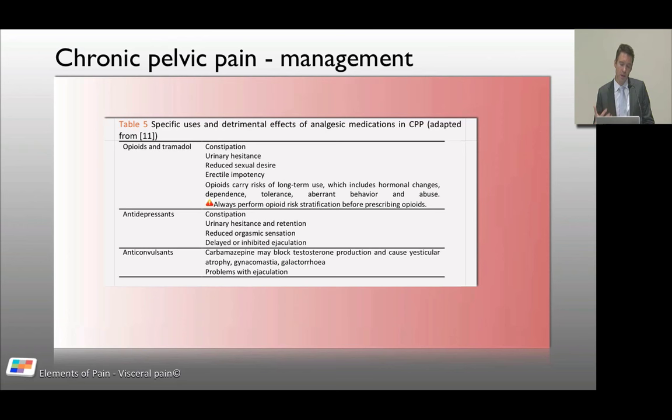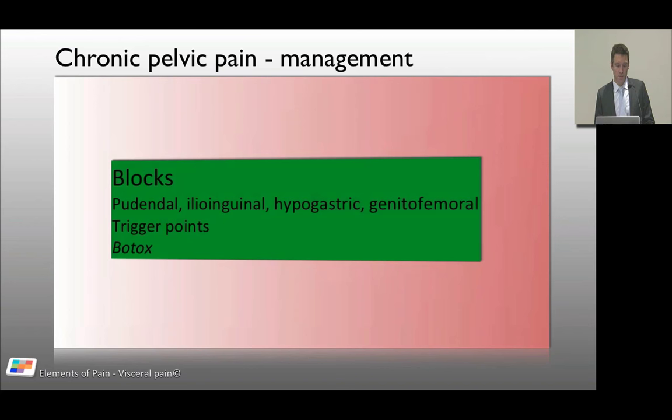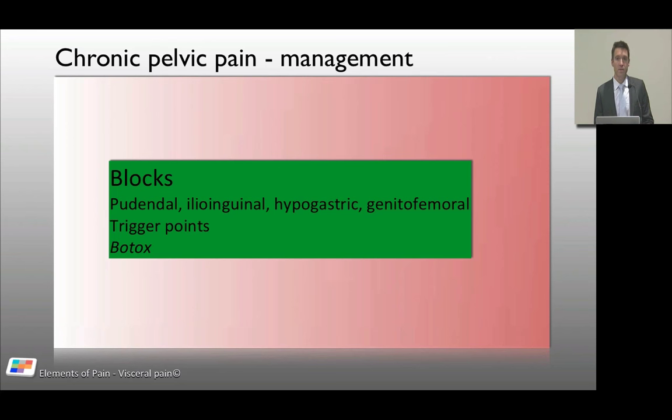Older anticonvulsants such as carbamazepine might cause problems that make things worse, such as gynecomastia and galactorrhea. Nerve blocks may be useful — various local nerve blocks can have a diagnostic element and an analgesia modulation effect, providing short-term relief and helping build rapport with the patient. Trigger point injections, done by an expert, and Botox can also be useful in some of these patients.